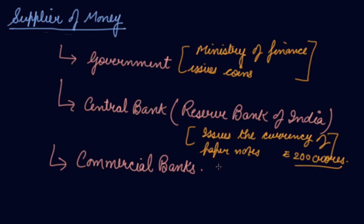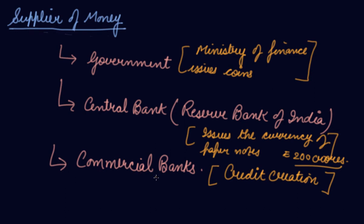The commercial banks are suppliers of money through credit creation — they are the credit multiplier. If you do not have money, they give you a loan in order to spend and satisfy your wants for goods and services. Commercial banks do not issue currency, but they create credit, resulting in a flow of money in the country, making them suppliers of money.